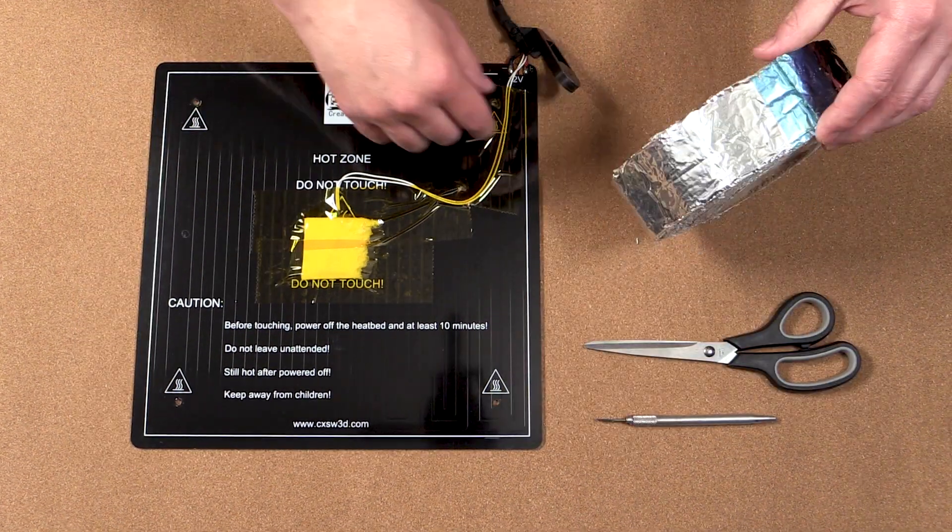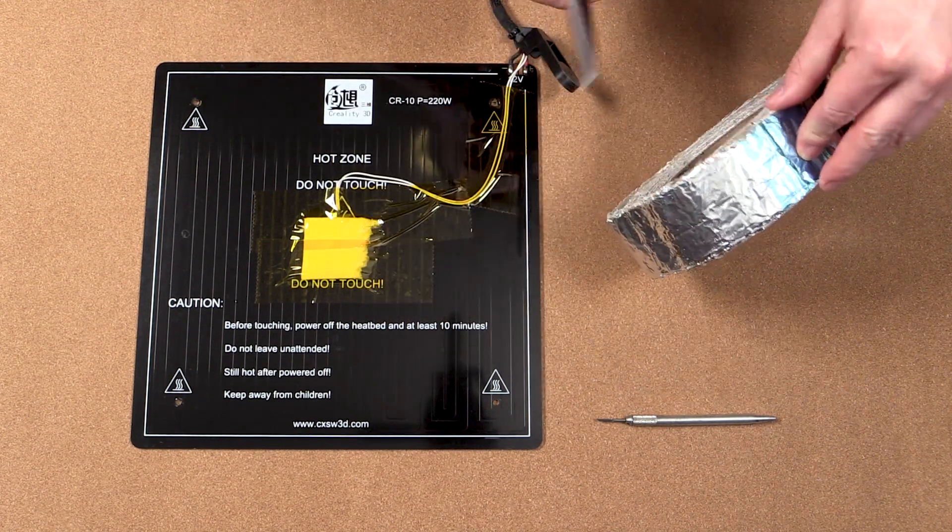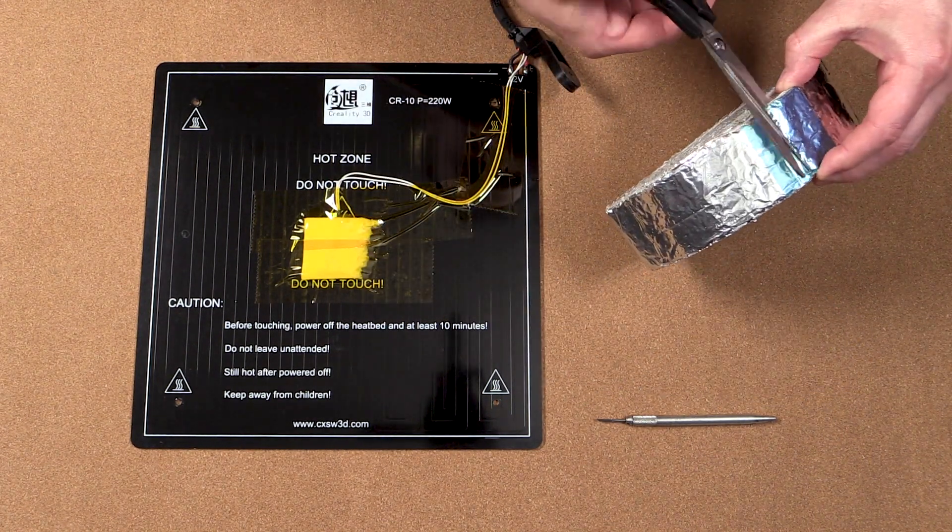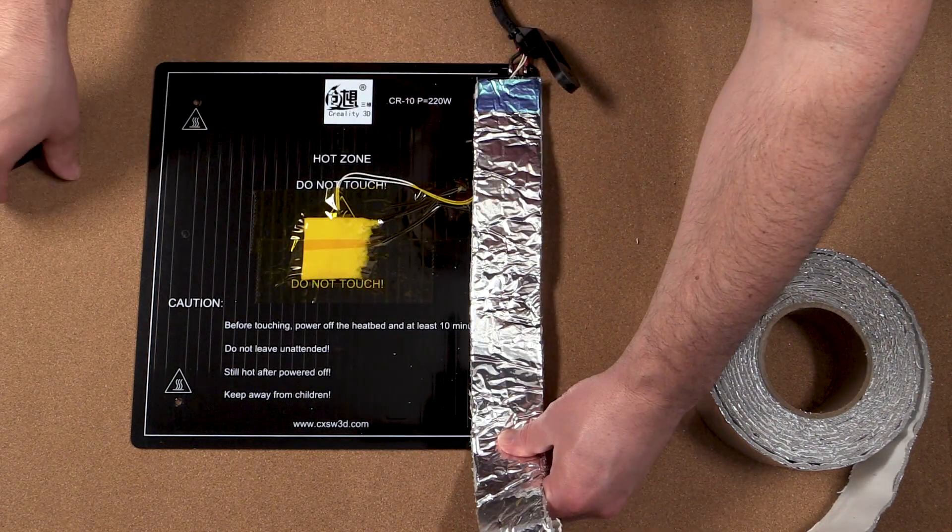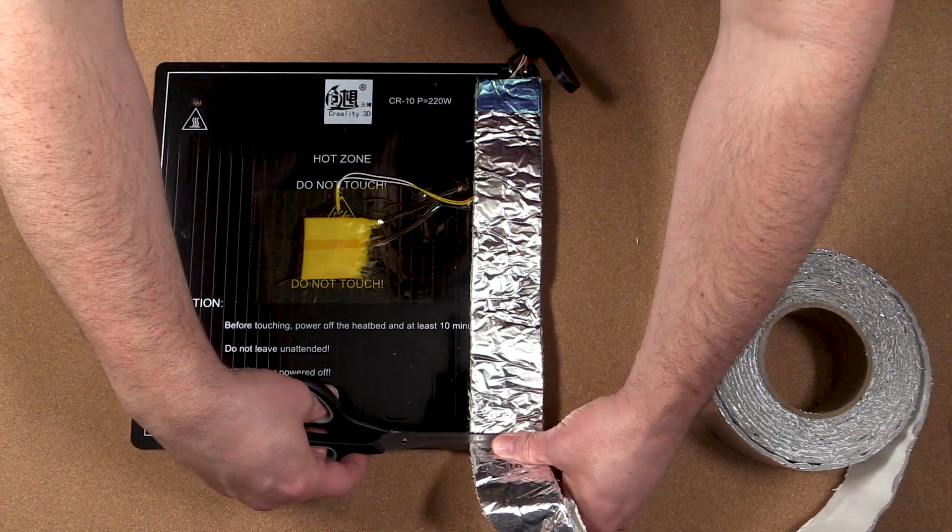To apply the insulation, all you really need is a pair of scissors and possibly an X-Acto knife. Simply measure out the insulation strips to size and cut them where needed.